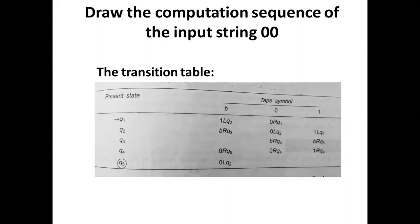We have to discuss drawing the computation sequence of the input string '00' for the Turing machine. The transition table represents the Turing machine with tape symbols B, 0, 1 and five states: q1, q2, q3, q4, and q5. Here q1 is the start state and q5 is the final state.